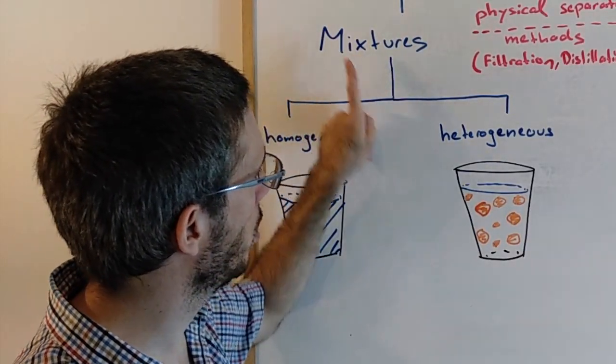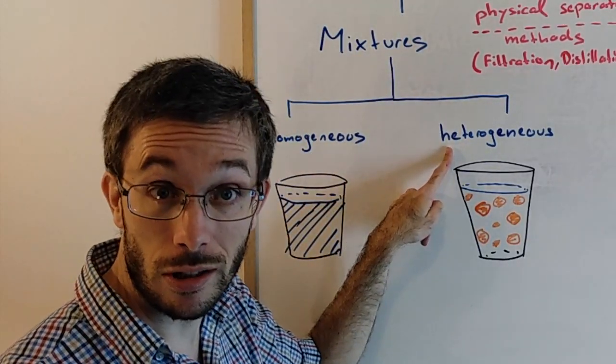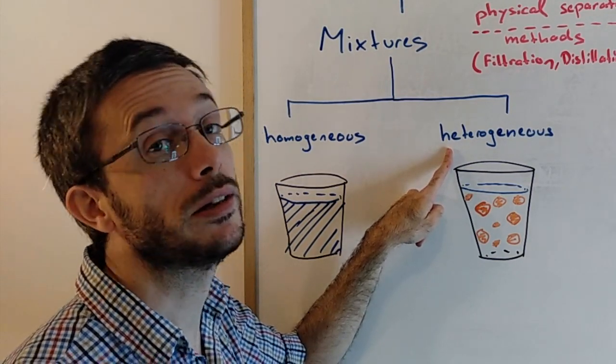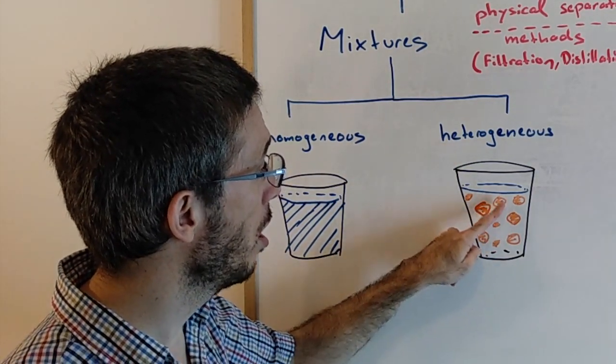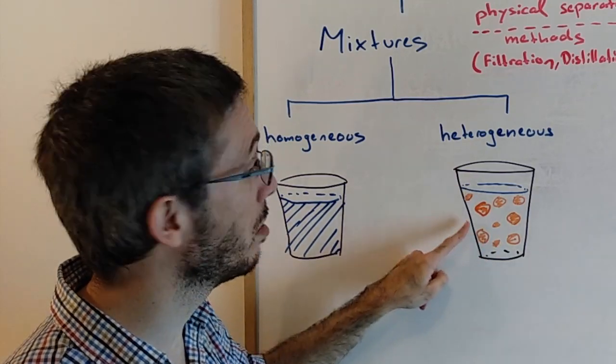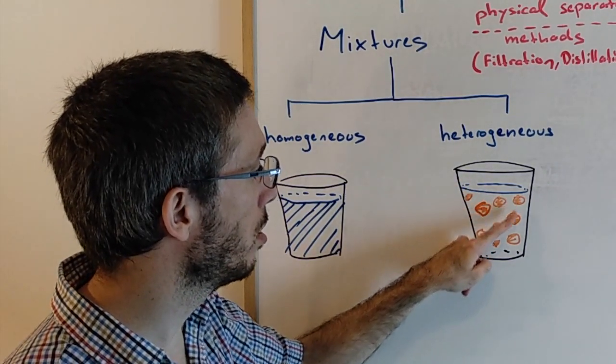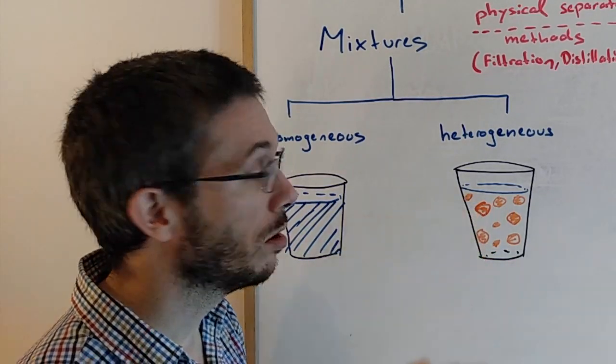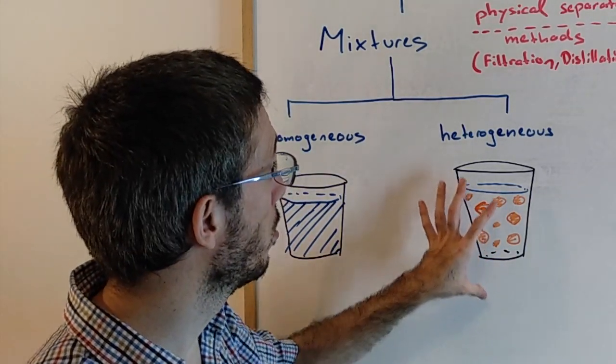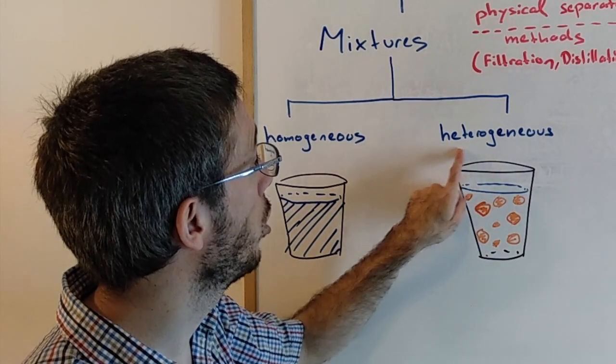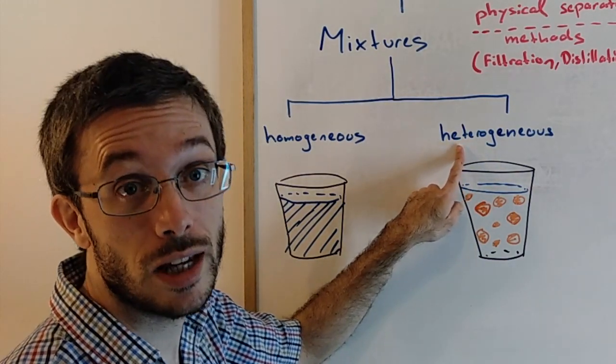The other type of mixture that is possible is heterogeneous mixture. If you see that one, you know immediately that it's a mixture because you actually see the different substances it is made of. For example, in bubble tea, you can see the liquid and you can see the little solid particles floating around. So then you know immediately this is a heterogeneous mixture.